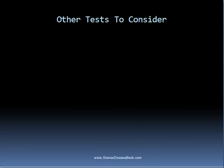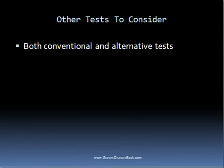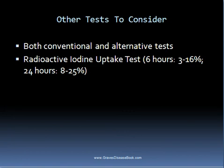In addition to the thyroid blood tests discussed, some of the following tests can be used in people with hyperthyroid conditions. You'll notice that I'll list both conventional and alternative tests. The radioactive iodine uptake test involves swallowing a liquid or capsule consisting of a small dosage of radioactive iodine in order to measure the amount taken up by the thyroid gland. This is usually done 6 and 24 hours after swallowing the radioactive iodine. A high uptake is suggestive of Graves' disease, though not conclusive. If there is also an uneven distribution of the tracer, this can indicate nodules or a multinodular goiter. In my opinion, this test isn't necessary in most cases.